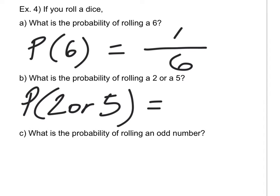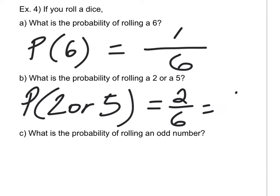Now what about the probability of rolling a two or a five? Rolling a dice gives six possible outcomes. How many of those are good for me? It's good if I roll a two, and also good if I roll a five — so two outcomes are favorable. That gives two over six, which reduces to one over three. The probability of rolling a two or a five is one-third.